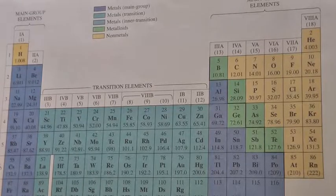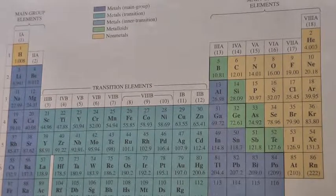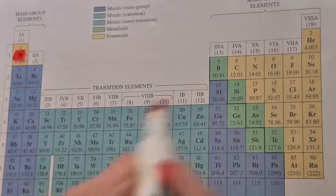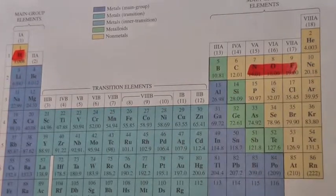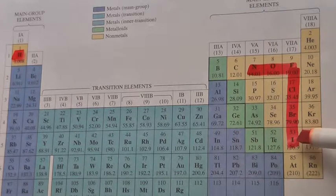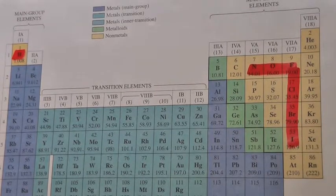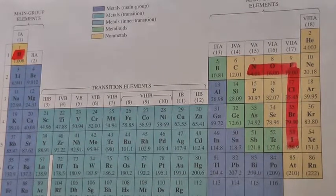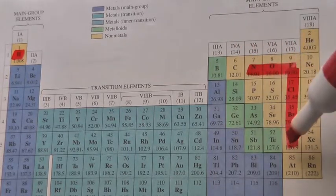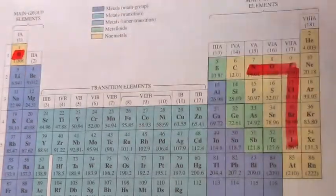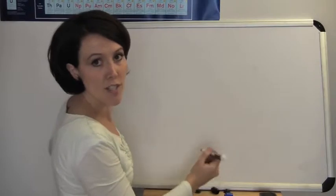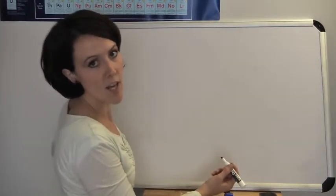What do the Lewis dot structures look like for the diatomic elements? Just a reminder: the diatomic elements are hydrogen, nitrogen, oxygen, fluorine, chlorine, bromine, and iodine. There are seven diatomic elements, and you can remember that by drawing a seven on the periodic table and remembering that hydrogen is included.